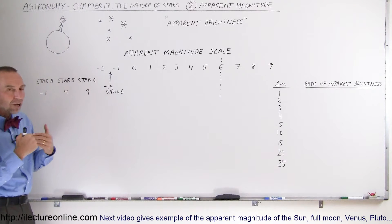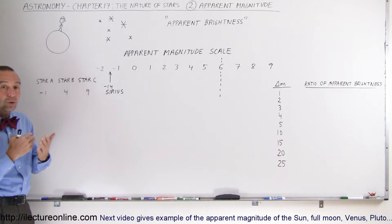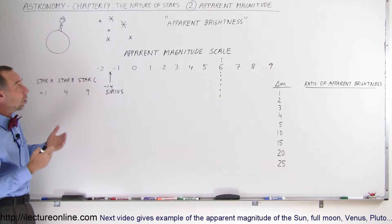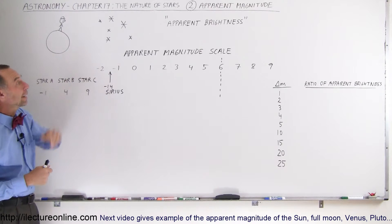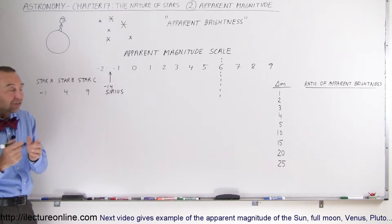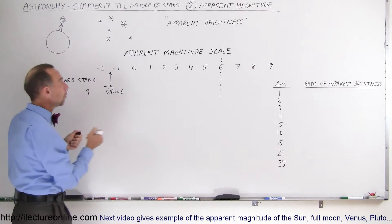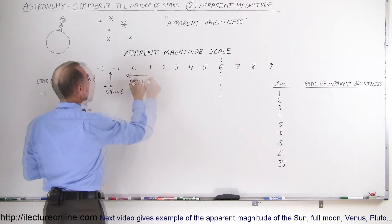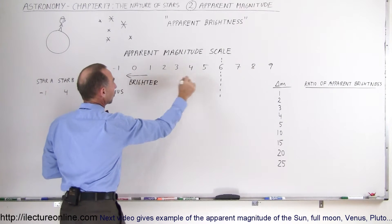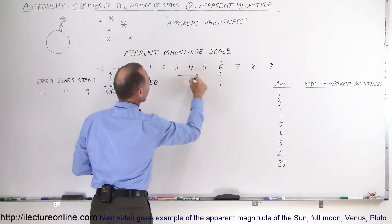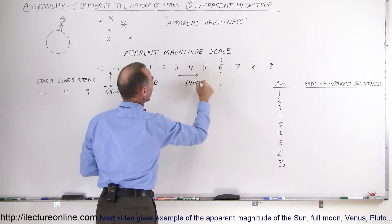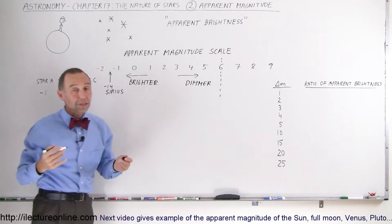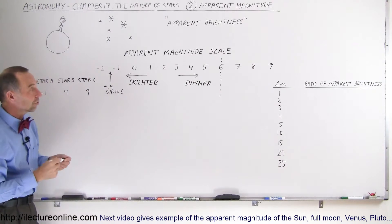In astronomy we have a scale that indicates which star is brighter and which star is dimmer — it's called the apparent magnitude scale. On this scale, the smaller the number, the brighter the star appears. And the bigger the number, the dimmer the star appears to us. It's kind of counterintuitive, but that's how we do it in astronomy.